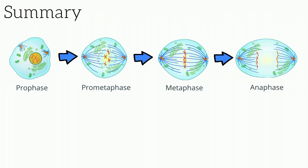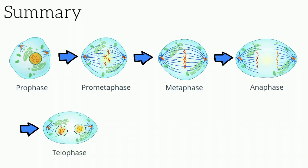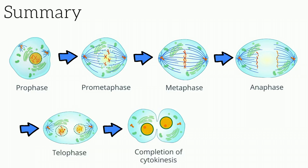In anaphase, spindle fibers pull apart sister chromatids, which is followed by telophase, in which the nuclear envelope reforms around chromatids. Finally, there is cytokinesis, in which the cell cytoplasm divides into two daughter cells via a cleavage furrow.